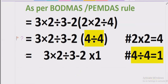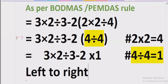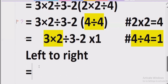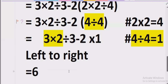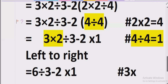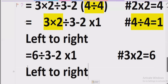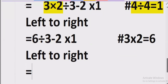We move to step three — going left to right in our expression to find multiplication and division. Here we have multiplication first, so we solve it first: 3 multiplied by 2 equals 6. We write 6 and keep the other parts as they are. Moving forward again, going left to right, we now find a division operation.